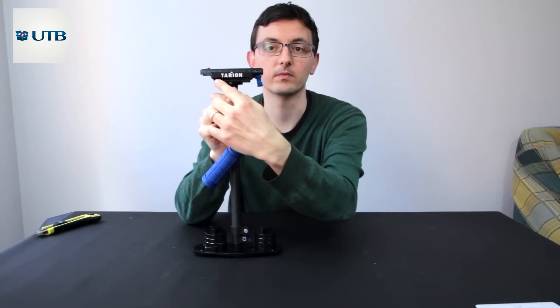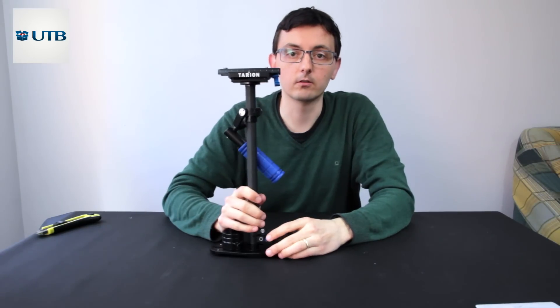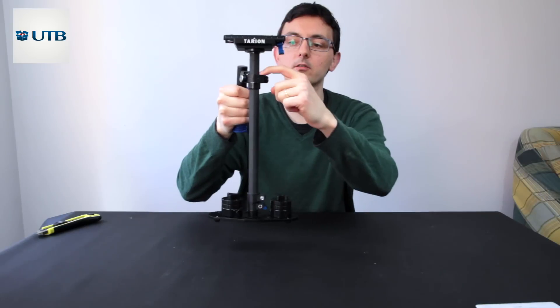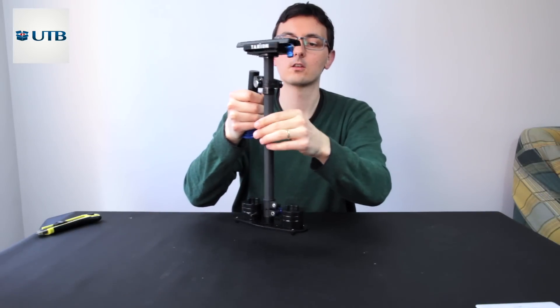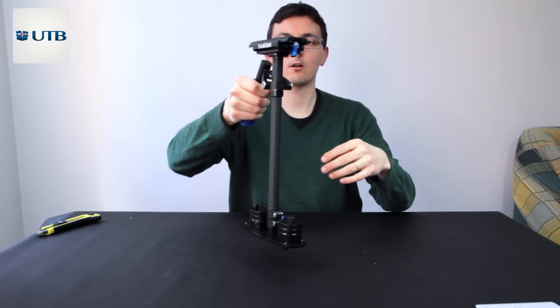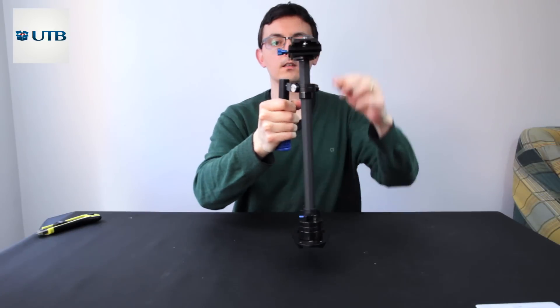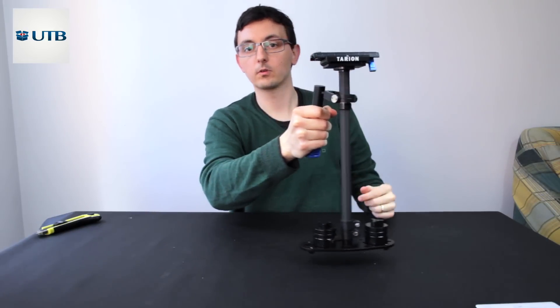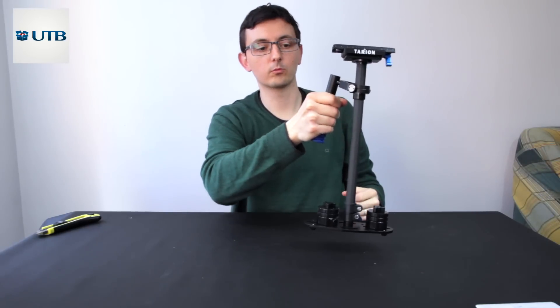So this is the DSLR support from Tarion. Okay, so let's get into detail. We have ball bearings inside here. So no matter how we are moving it, the top, the camera, will always be smooth.